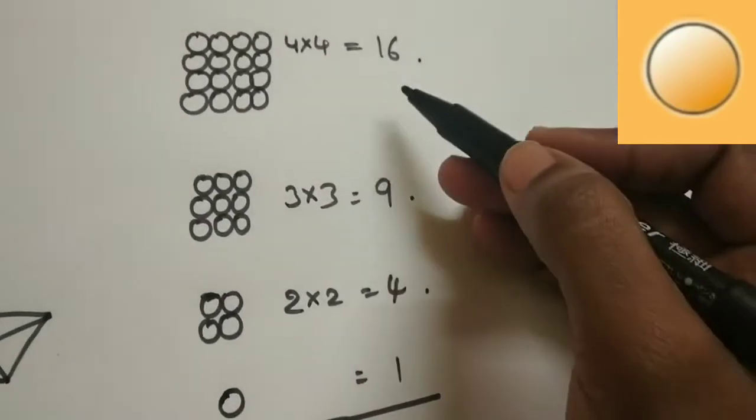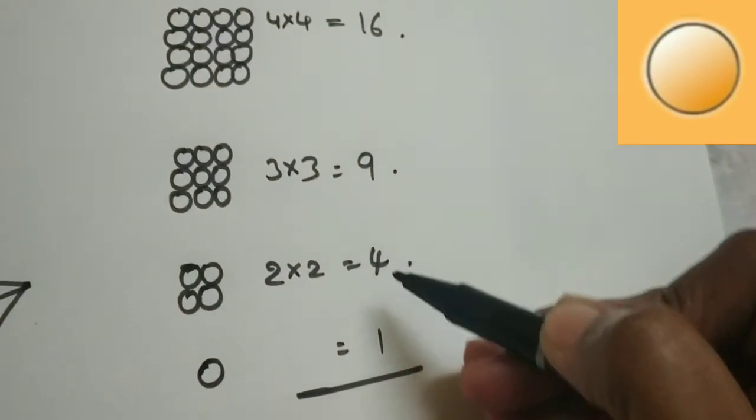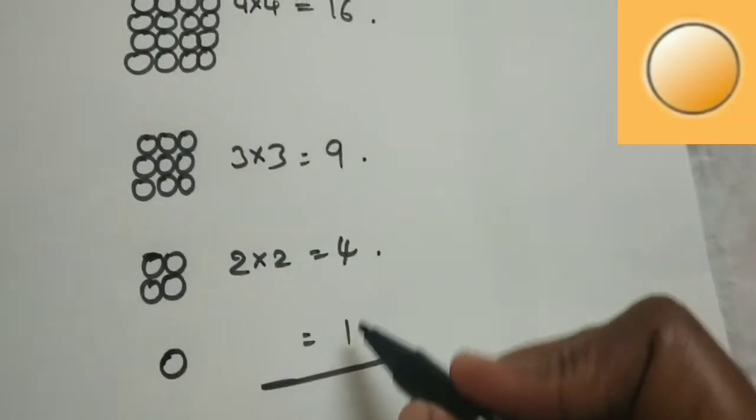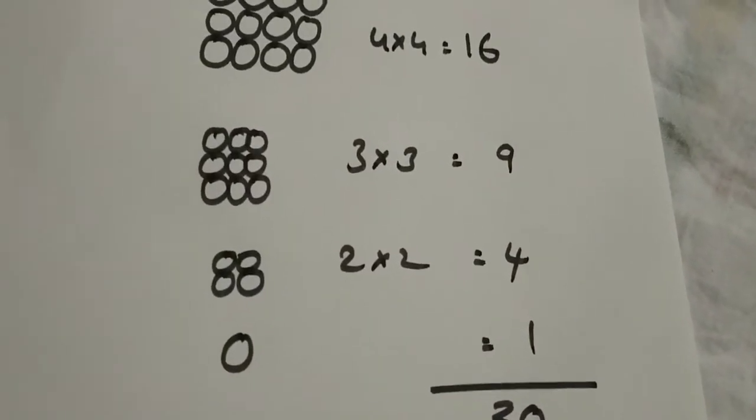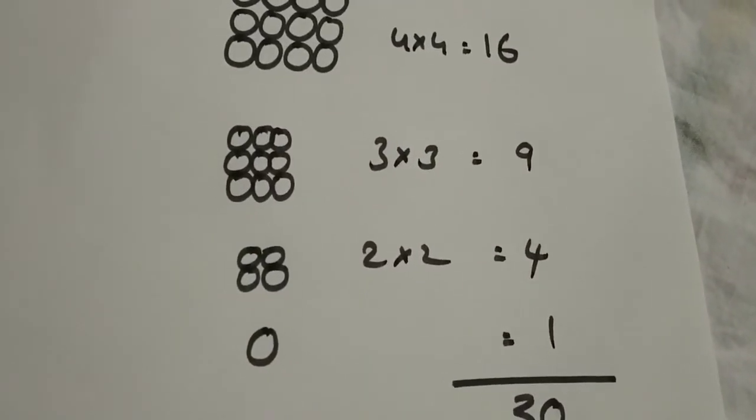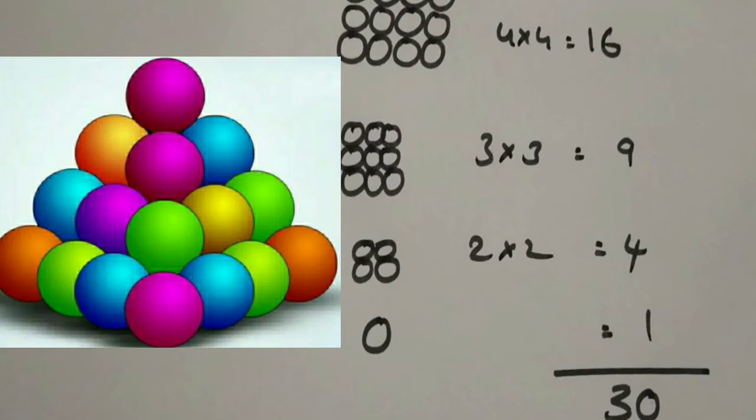Now, we add all those. 16 plus 9 is 25, plus 4 is 29, plus 1 is 30. So, you are going to get 30 as the total number of balls.